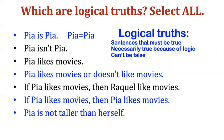Think about the logic and structure of if-then claims. Like 'If Pia likes movies, then Pia likes movies.' This is a bizarre, repetitive thing to say — it's sort of like circular reasoning — but it can't be false. Because if it is true that she likes movies, then of course it is true that she likes movies; that's just repeating the same thing. So all of these examples in blue are logical truths.